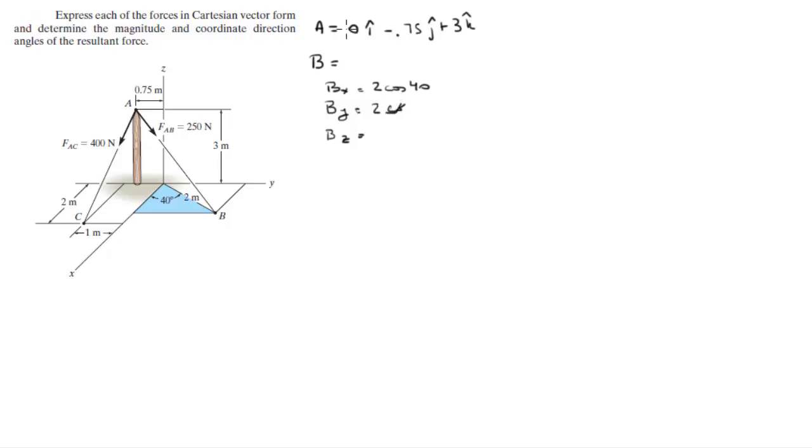And the Z component is 0. So this comes out to be 1.532i plus 1.286j plus 0k.